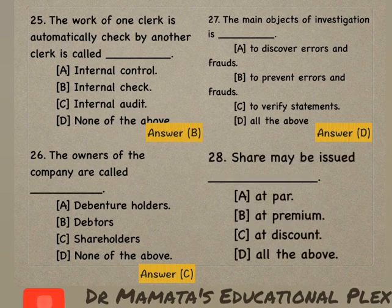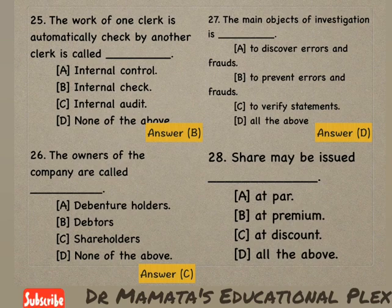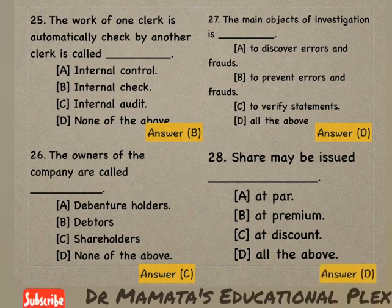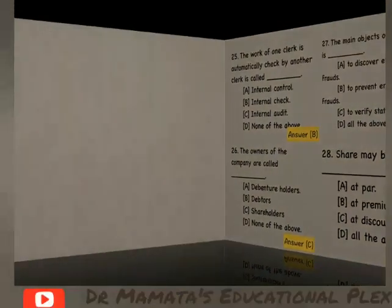Next question: Share may be issued at — par, at premium, at discount, or all of the above? Share in tino tariqon se issue kiya ja sakta hai — at par, at premium, at discount. So option D, all of the above, is the correct answer.